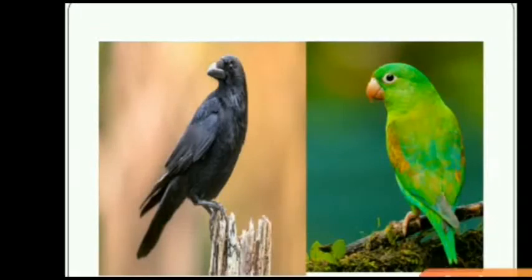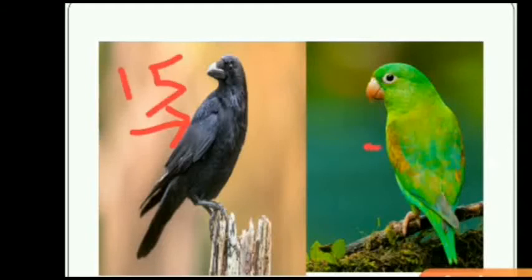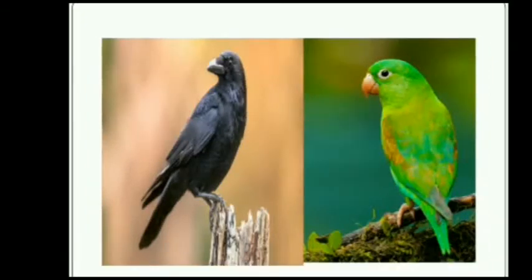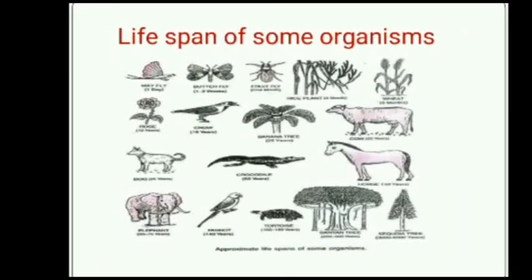Let us have a look at this picture — a crow and a parrot. They are nearly similar in their sizes but different in lifespan. The crow has a lifespan of 15 years and a parrot has a lifespan of 140 years. So we know lifespan is not correlated with body sizes. Let us see the lifespan of some organisms.